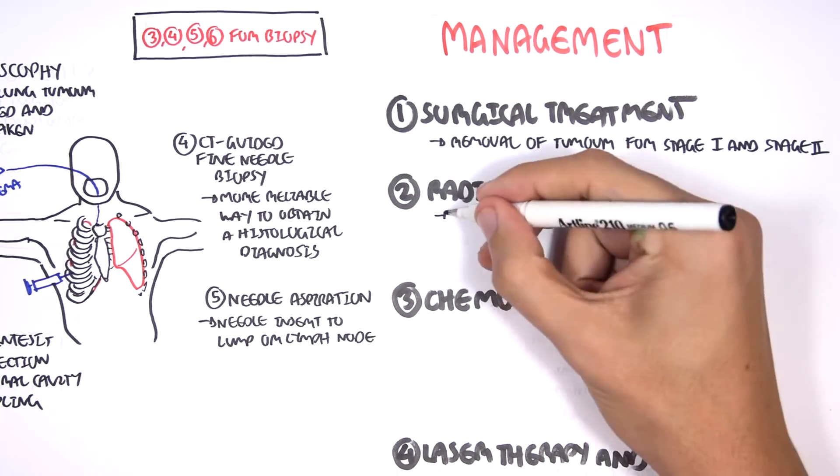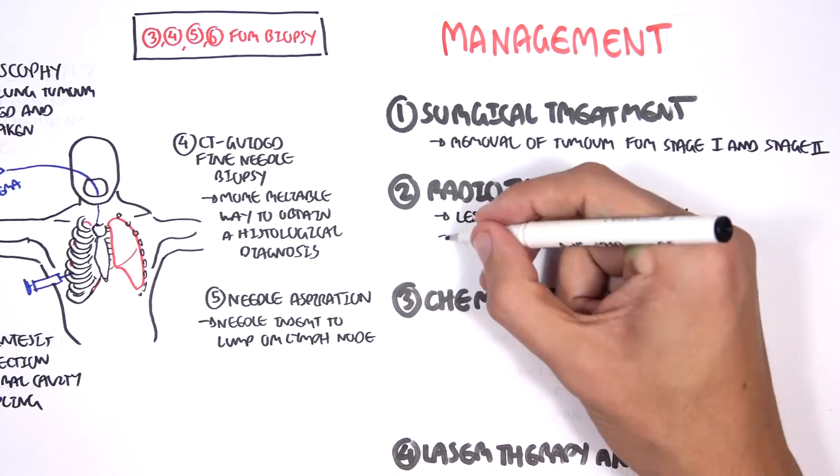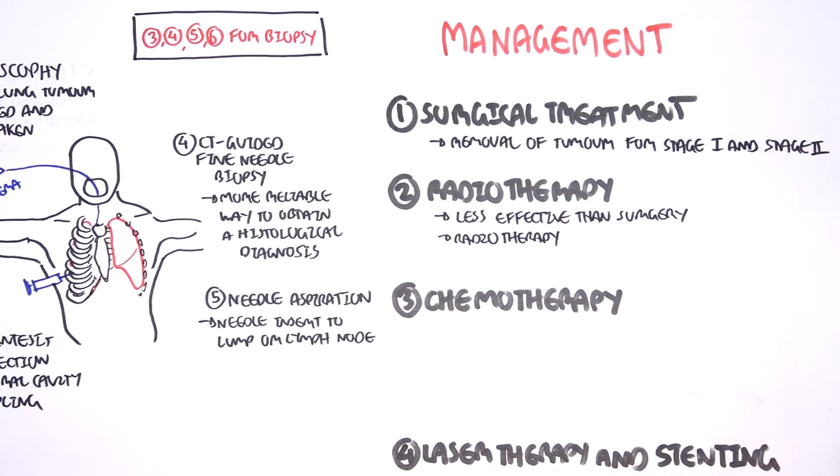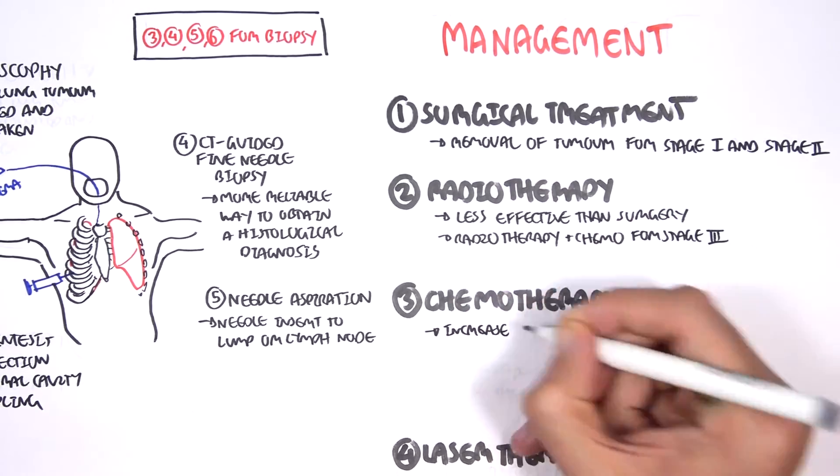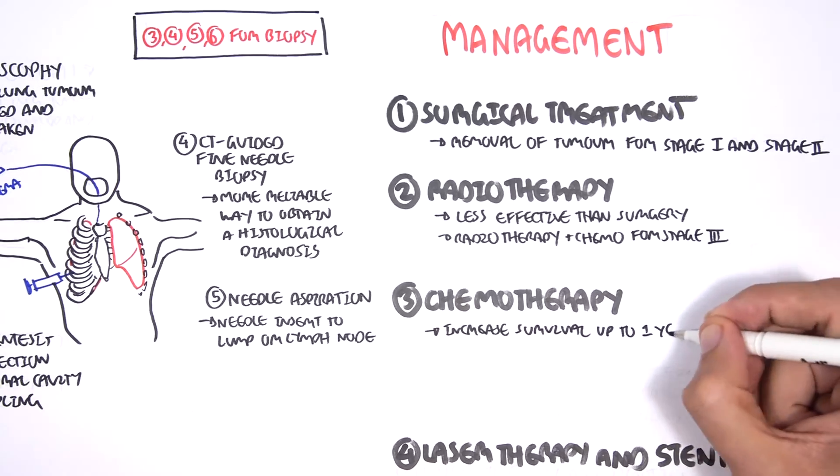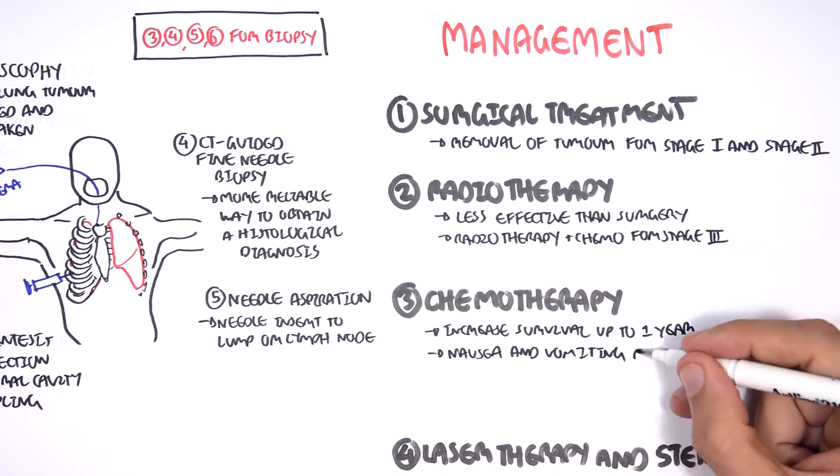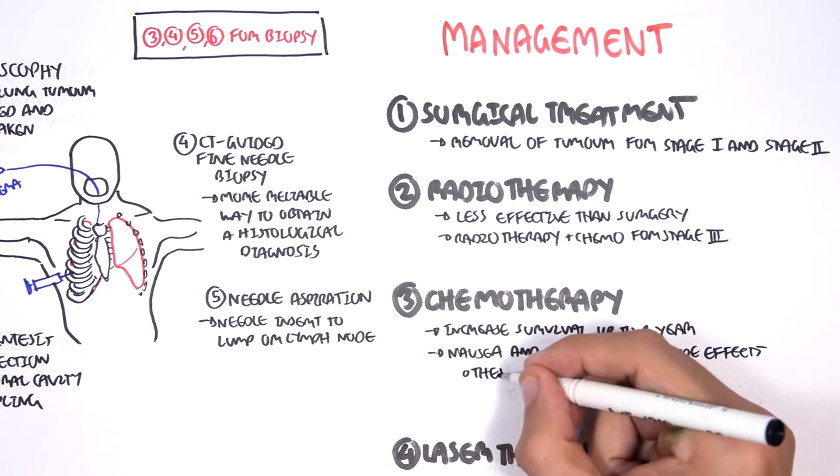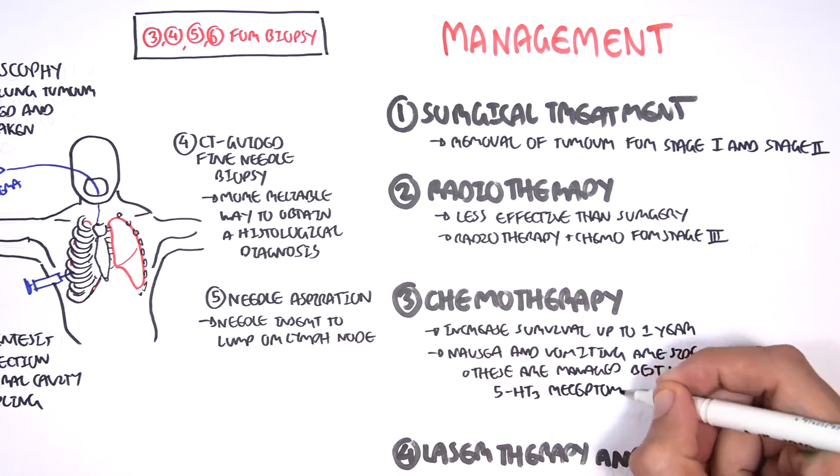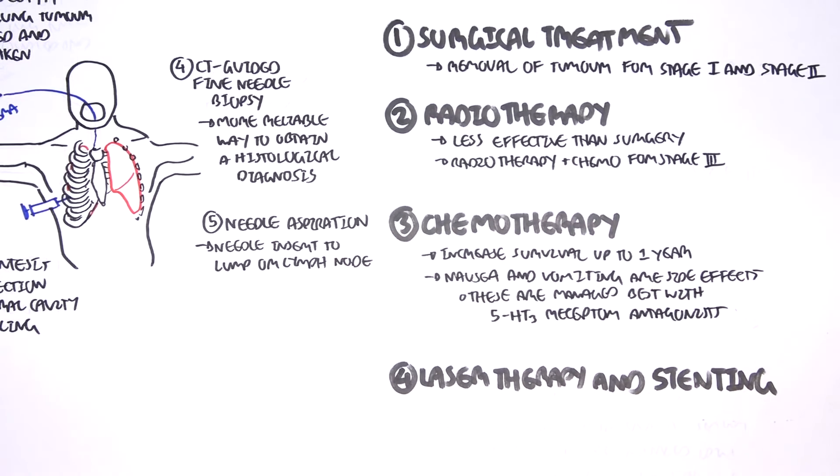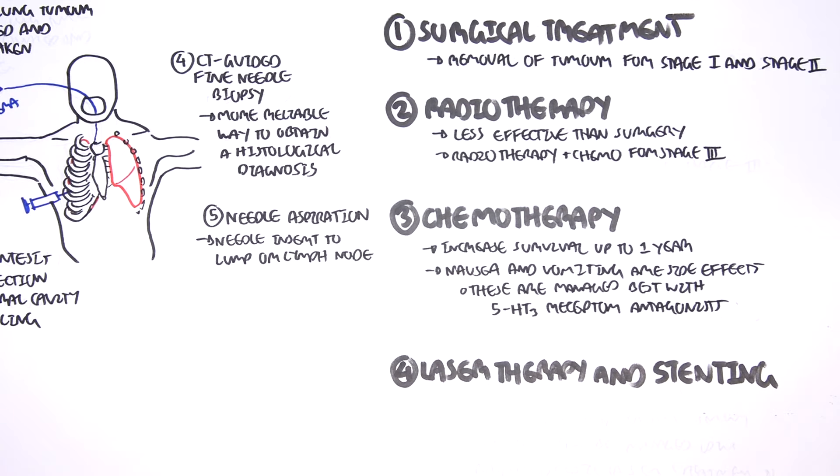Radiotherapy is less effective than surgery. However, radiotherapy is used in combination with chemotherapy for stages three. Chemotherapy increases survival up to one year. Nausea and vomiting are side effects. These side effects are managed best by the 5-HT3 receptor antagonists because these drugs will target the chemoreceptor trigger zone, thus preventing the vomiting, nausea-associated symptom.